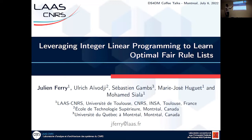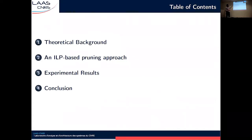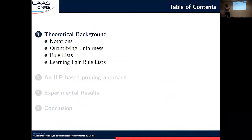In the second part of my talk, I'm going to present the work on using integer linear programming techniques to learn optimal fair rule lists. First I will introduce the necessary background, then I will present our contribution, which consists in using integer linear programming methods to prune the search space of an interpretable fair learning algorithm. I will then assess empirically the effectiveness of our approach. I will introduce the notations used, show how we can quantify unfairness in machine learning, introduce rule list models, and present the baseline algorithm used to learn fair rule lists.